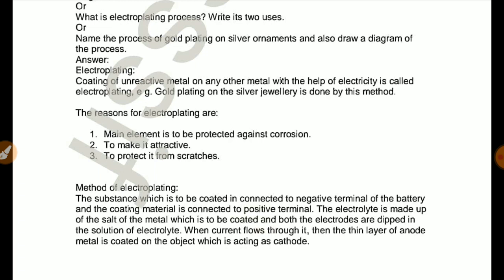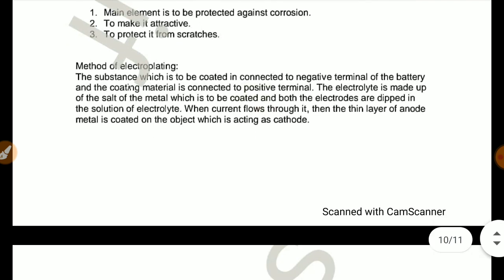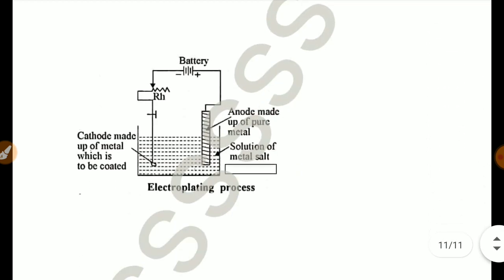Method of electroplating: The substance which is to be coated is connected to negative terminal of the battery and the coating material is connected to the positive terminal. The electrolyte is made up of the salt of the metal which is to be coated and both the electrodes are dipped in the solution of electrolyte. When current flows through it, then the thin layer of anode metal is coated on the object which is acting as cathode. This way you have to make a diagram of electroplating process.